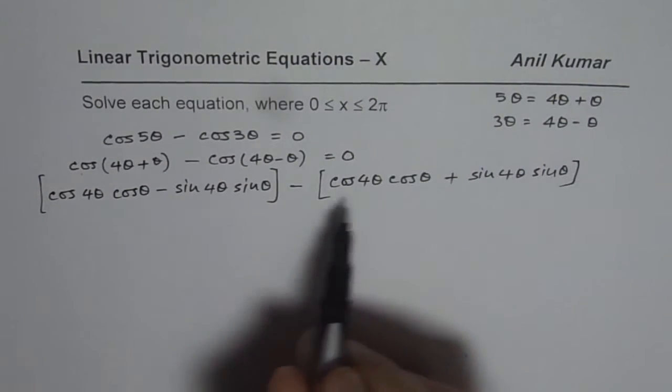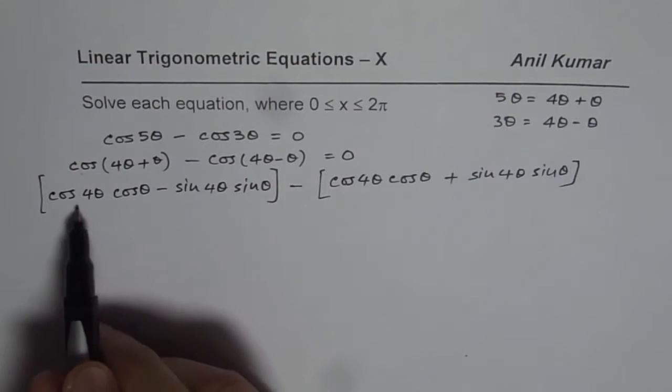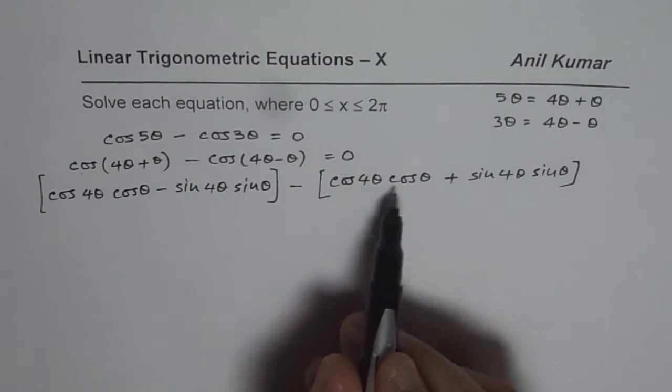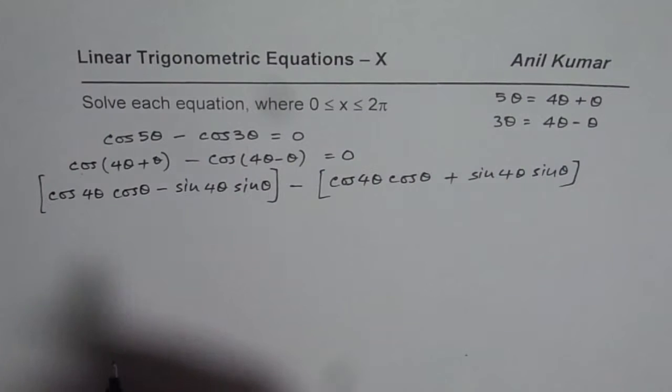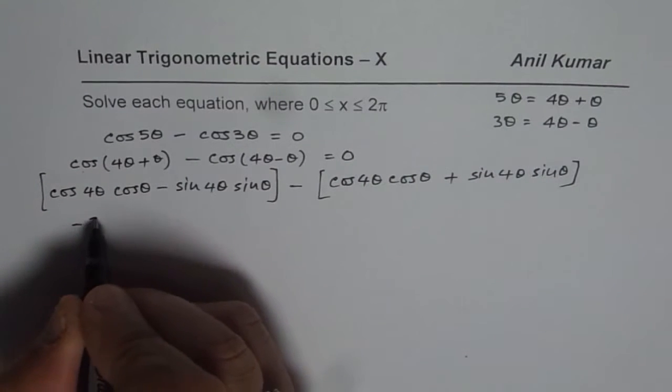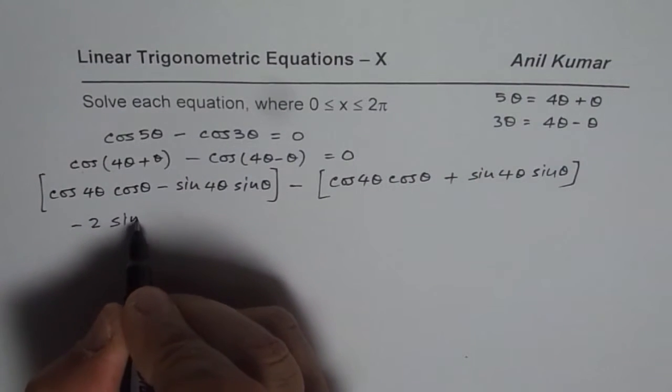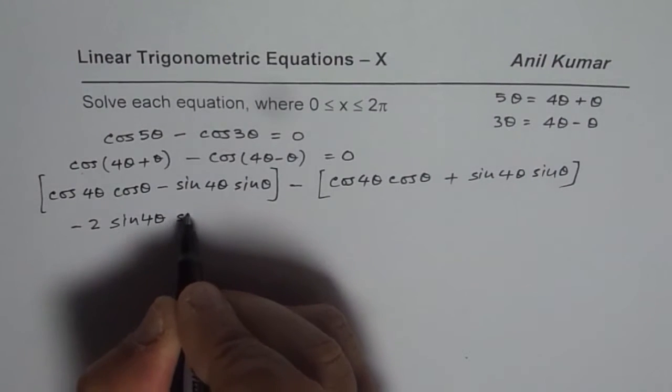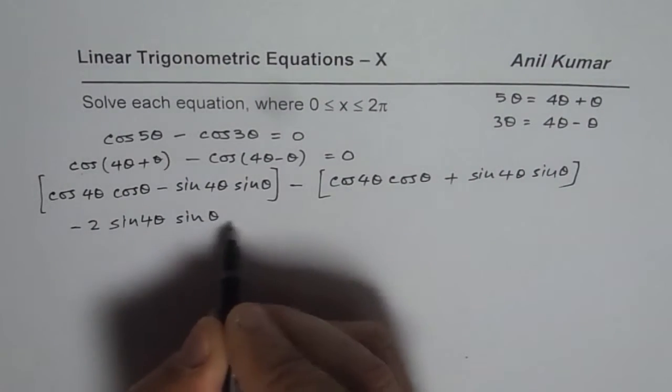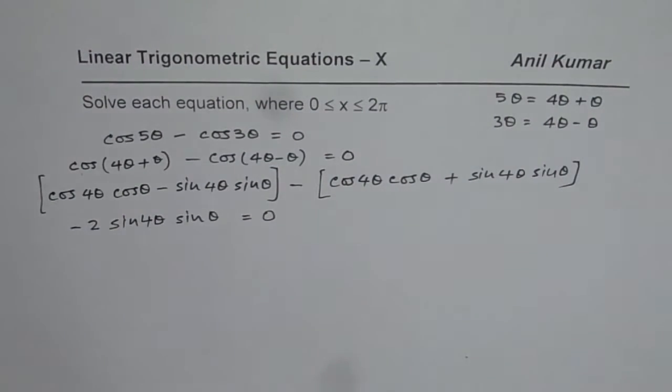If you take away this term from here, then cos 4θ cos θ cancel out and what you get is minus 2 sin 4θ sin θ equals 0. So we have got factored form from that sum or difference form.